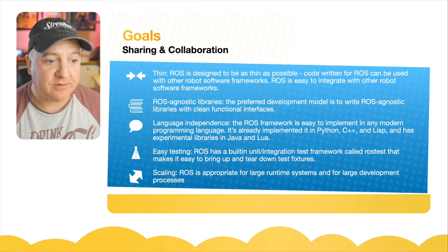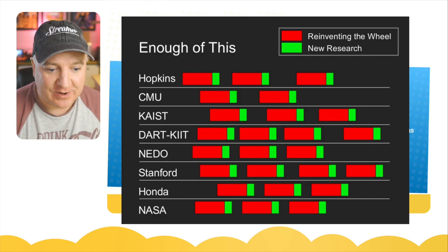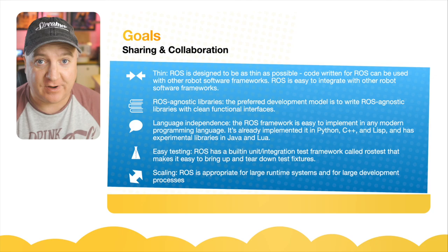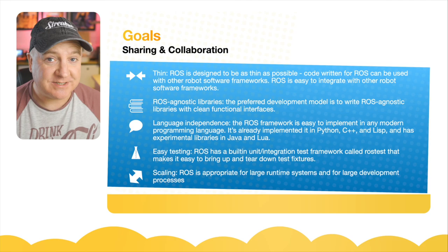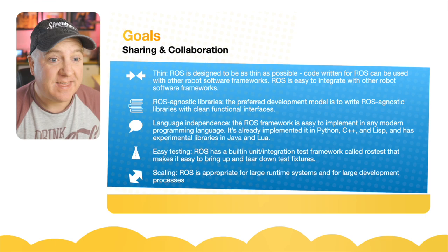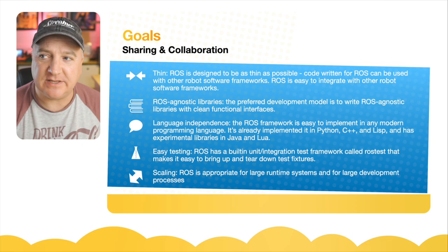They had a famous slide showing lots of reinventing the wheel and very little new research. They wanted to stop this in the robotics era. People have created very similar kinds of code and frameworks repeatedly - I almost did the same thing myself creating Smarts Lab with message passing, message formats, and inter-process communication. So they thought enough is enough. They want code to be shareable and collaborative, and ROS is designed to be as thin as possible so code written for ROS can be used with other robot software frameworks.